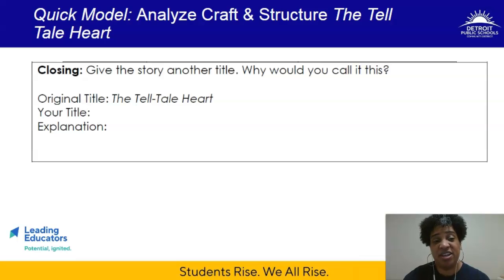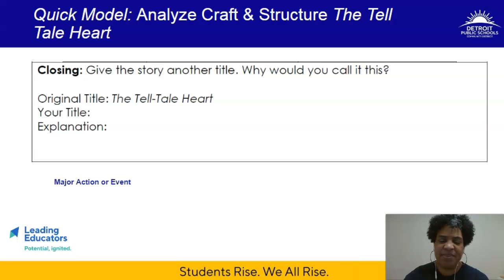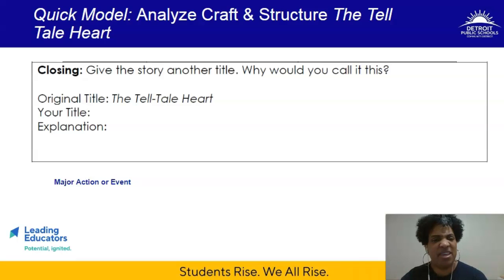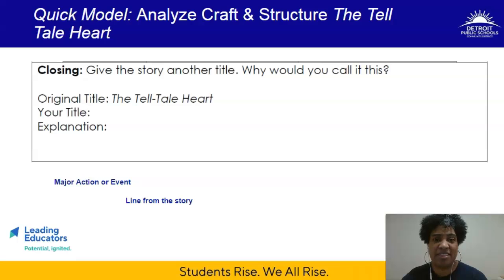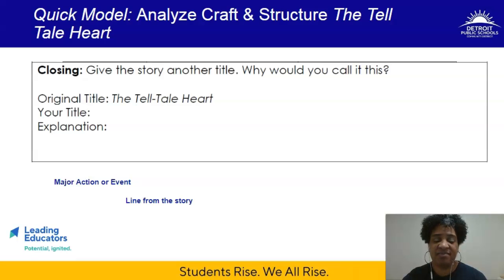Finally, in the closing activity, you're going to give the story another title and explain why. We know the original title is The Telltale Heart — now it's your turn. Some places to start: one strategy is that a title may come from a major action or event in the story, giving the reader a clue. Another strategy is a line from the story — a piece of dialogue or something anecdotal mentioned by the narrator. If you remember from Everyday Use, for example, that phrase was found in the story as it related to the use of the quilt. That's another source of inspiration.